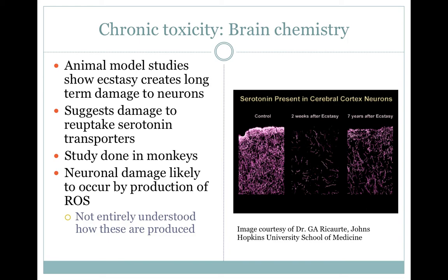Long-term effects of ecstasy use include memory damage and reduced serotonin levels. Animal studies have shown that two weeks after repeated ecstasy use — two doses a day for four days straight — serotonin levels in the serotonin-releasing neurons of the hypothalamus are significantly reduced. Even seven years post-treatment, experimental monkeys had reduced serotonin levels. As shown in the accompanying image, reactive oxygen species are believed to be one of the causes of neuron damage and chronic MDMA toxicity.